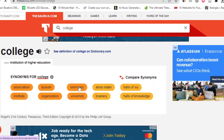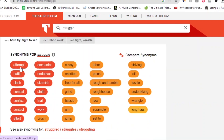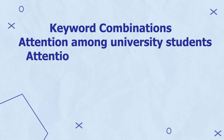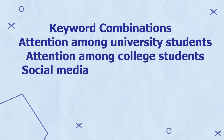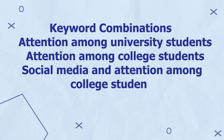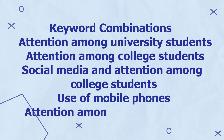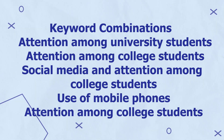For example, the synonym for college is university, and synonyms for struggle include striving, attempt, and battle. Different keyword combinations we can use include: attention among university students, attention among college students, social media and attention among college students, and use of mobile phones and attention among college students, among other keywords. Let's combine these keywords and find scholarly articles for our literature review.